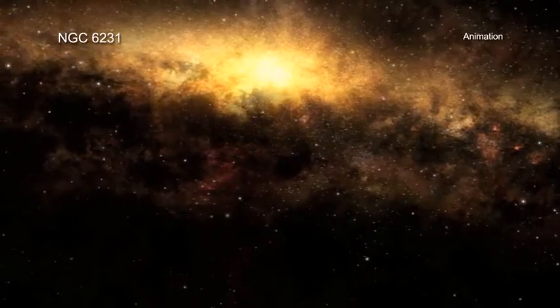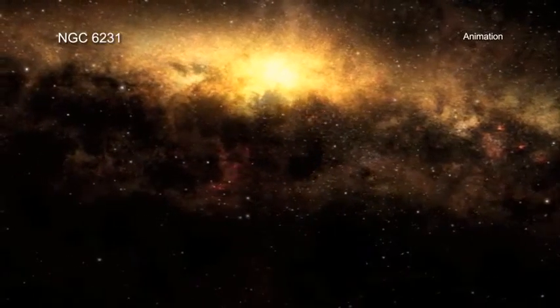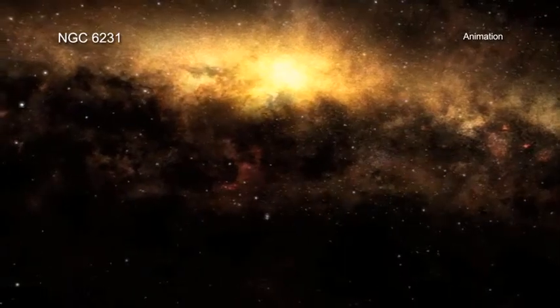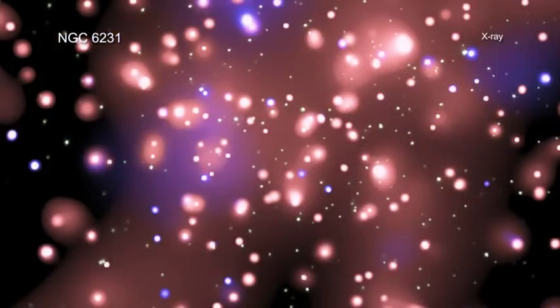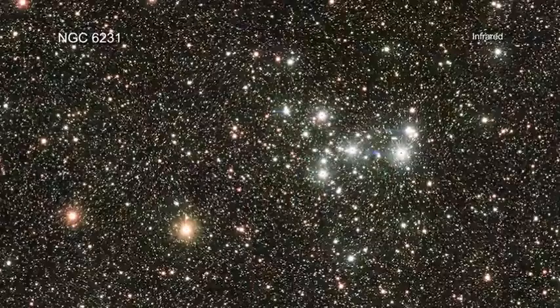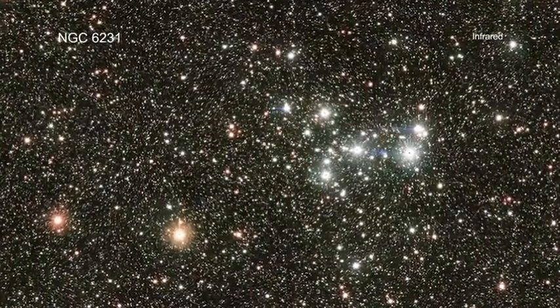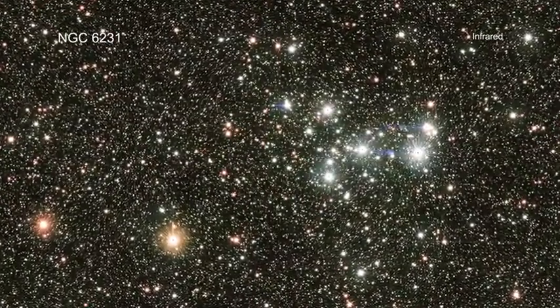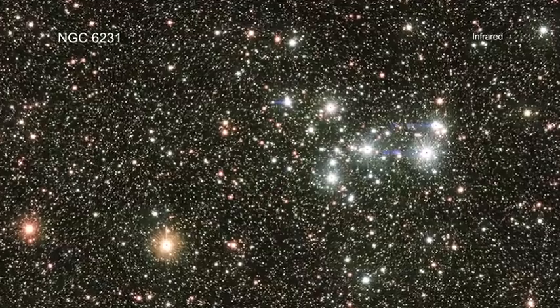Members of the cluster can be identified by selecting signs of stellar youth. The Chandra data, combined with infrared data from the Vista Telescope, have provided the best census of young stars in NGC 6231 available.